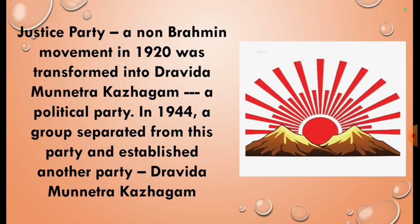The next party is Dravida Munnetra Kazhagam, that is the Justice Party. A non-Brahman movement in 1920 was transformed into a political party. In 1944, Justice Party came to be known as Dravida Kazhagam. A group separated from this party and established Dravida Munnetra Kazhagam. Another group separated in 1972 and established All India Dravida Munnetra Kazhagam. Its focus is protection of Tamil identity; it has been a member of coalition government at the center for some years, has support from all sections of society, and implemented many policies over a long period in power.